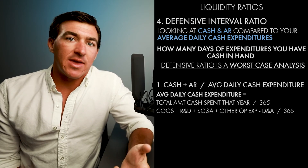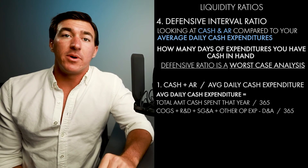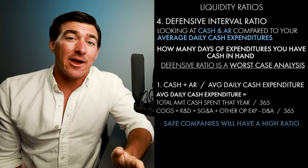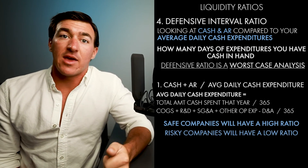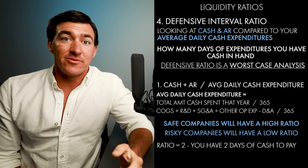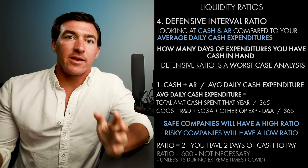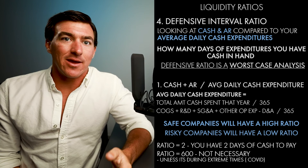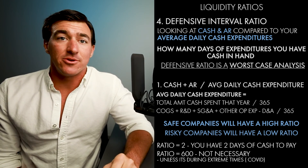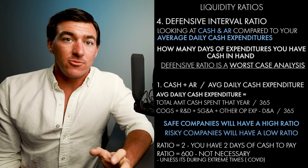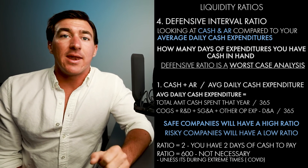Then you look at the ratio: cash plus accounts receivable on top, divided by that average daily cash expenditure you just calculated — and that's your defensive interval. Higher is safer; lower is riskier. If you only have two, that means you have enough cash to cover two days of expenditures — probably not good. If you have 600, that's also maybe more than necessary. At least now you know this ratio exists, what it's used for, and how to calculate it.